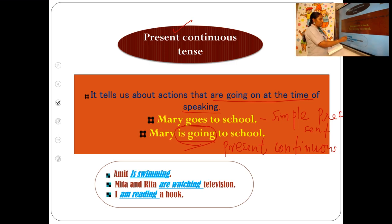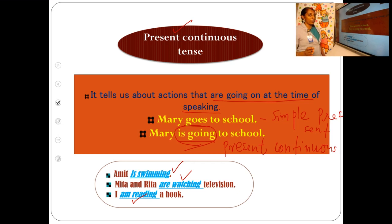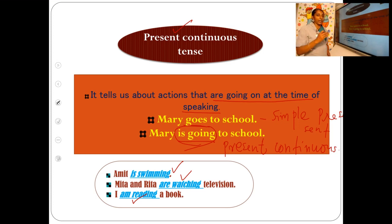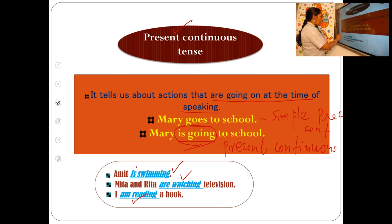Look at these three sentences: 'Amit is swimming,' 'Meeta and Rita are watching television,' 'I am reading a book.' In the first sentence the verb is 'is swimming'; in the second it is 'are watching'; in the third it is 'am reading.' You are not supposed to say 'swimming,' 'watching,' or 'reading' alone — the full verb phrase includes the helping verb.